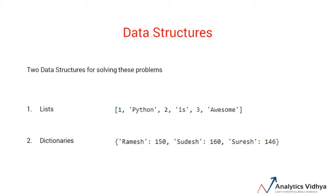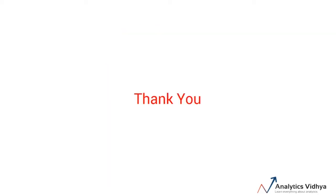For example, here, one comes before Python, Python comes before two, two comes before is, but there is no sequence between Ramesh, Sudesh, and Suresh. We will discuss each of them in detail in the later videos. Thank you.